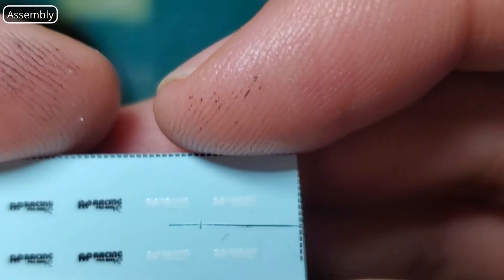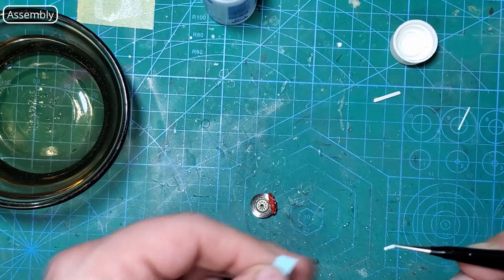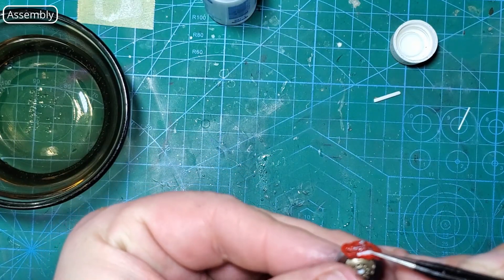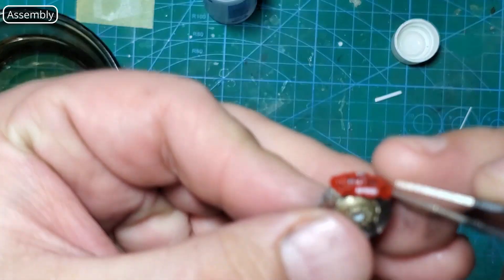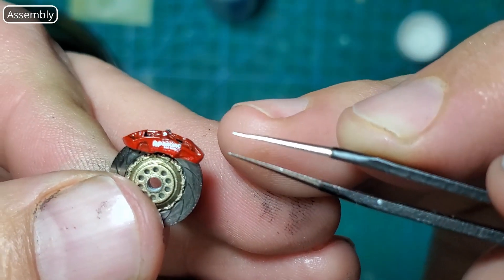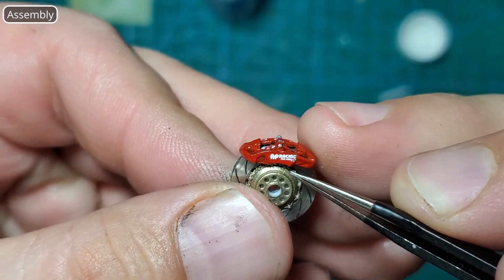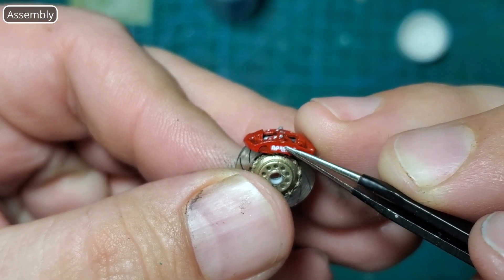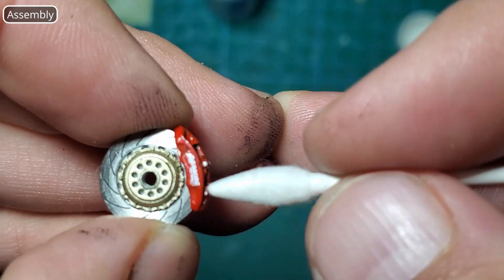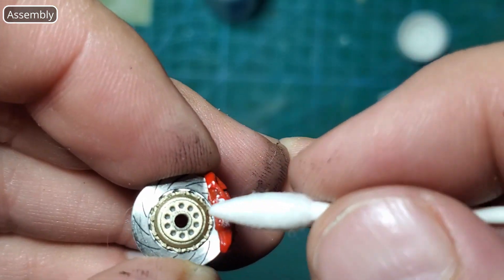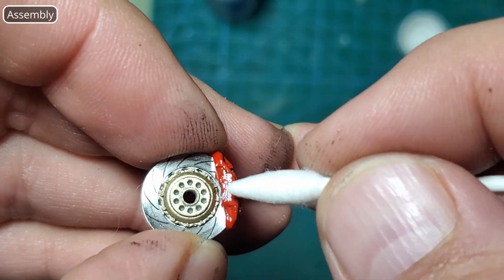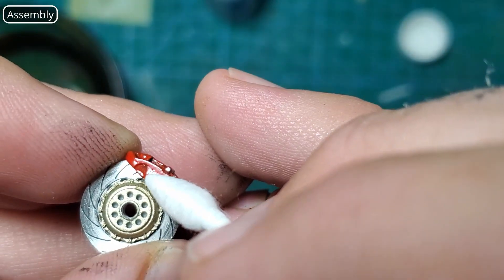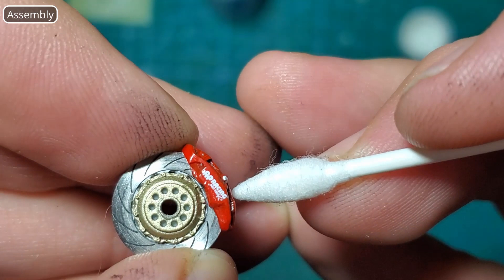The last step before we mount these is to add our decal. I'm going to use the light ones. Just dip them in the water for about 10 seconds, apply some micro set to your part, fiddle around with them, get them lined up perfectly in place. Then use a cotton bud to remove the excess water. Knock it out of place, fiddle around with the cotton bud, try and get it back into place. Eventually get it somewhat close to where you want it and then just leave it be to dry.